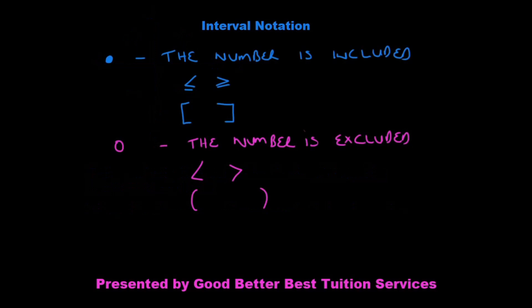The next thing I'd like to look at is interval notation. We have a closed dot or a closed circle — this means that the number is included. When the number is included, it is represented by a less than or equal to, or greater than or equal to sign. It's also represented by square brackets. When we have an open circle, it means the number is excluded, and it's represented by round brackets.